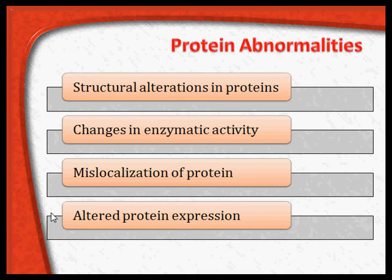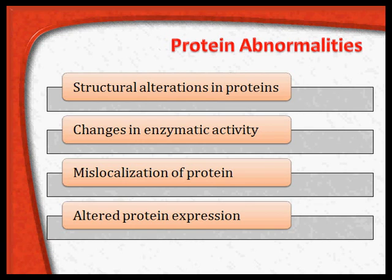So, the genetic abnormalities in tumor genetics are related to the chromosomes, the DNA, the RNA, and protein abnormalities. All of these, either individually or together, can contribute to the formation of tumors. This is, in short, some understanding about tumor genetics. Next, we will see tumor immunology before we go on to the tumor markers.